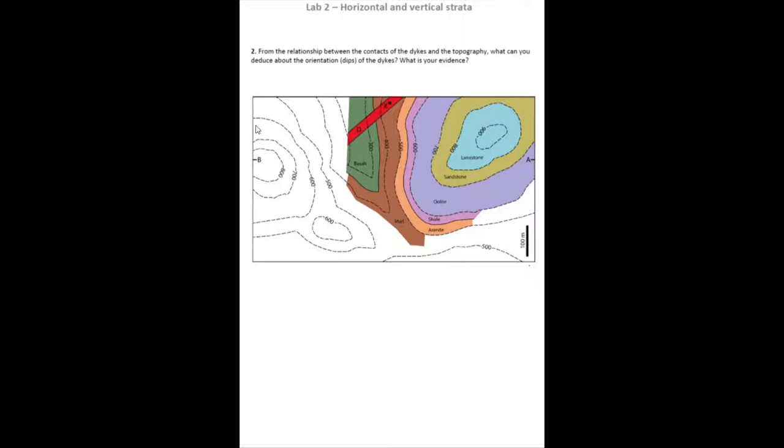The second question says from the relationship between the contacts of the dikes and the topography, what can you deduce about the orientation or dips of the dikes? What is your evidence? Well, what you can see,